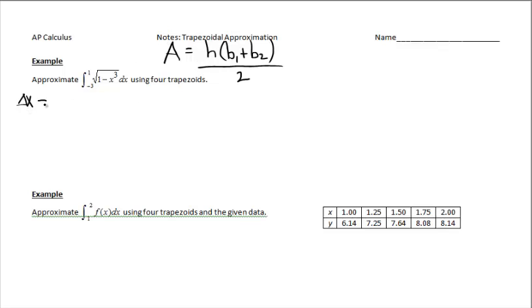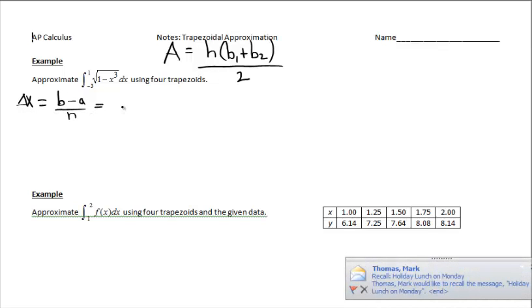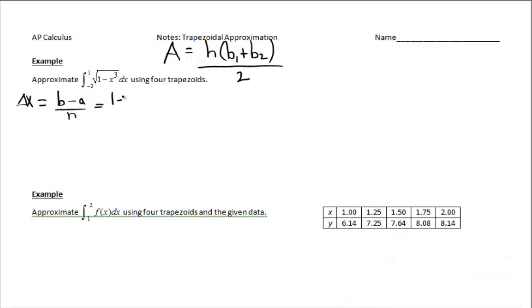The height, if you will. Delta x equals b minus a over n, that handy formula. In this case, it's 1 minus negative 3 over 4, and that's going to calculate to 1. So our trapezoids are equally spaced. They all have a width of 1.